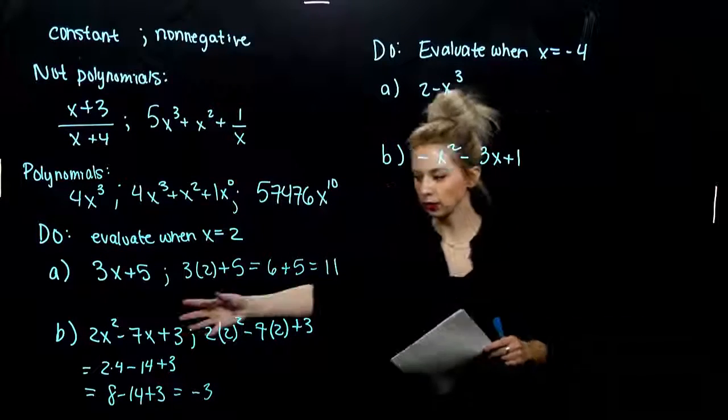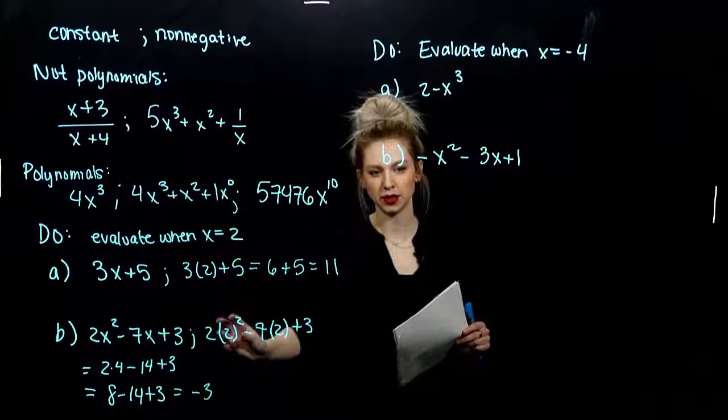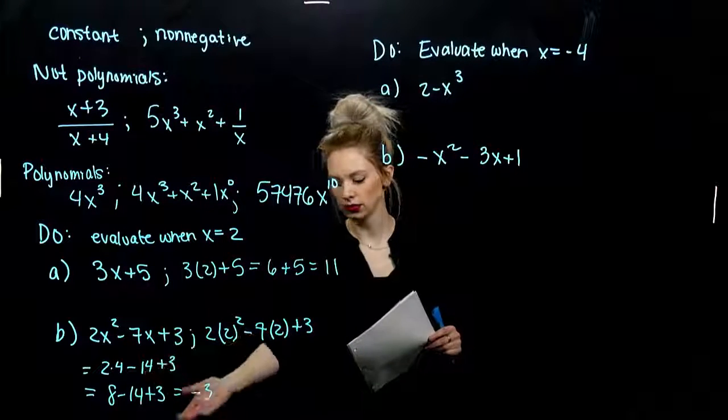Negative 3, all together. So for that polynomial, at 2, when I plug in 2 for x, I get out negative 3.